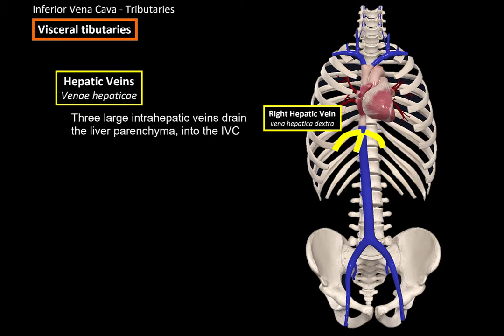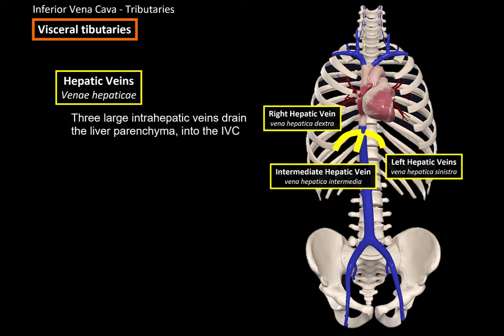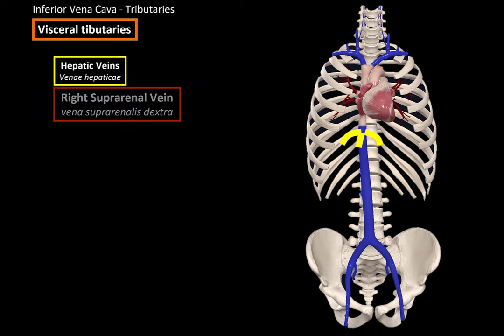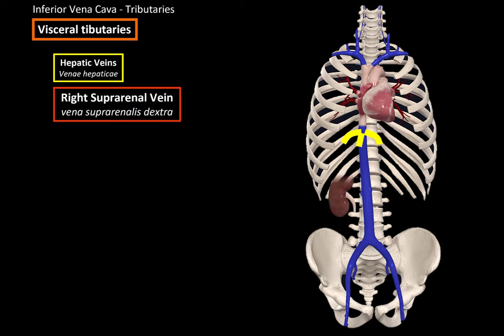There are three hepatic veins: the right hepatic vein, the intermediate, and the left. Next we have the right suprarenal vein, which drains blood from the suprarenal gland into the inferior vena cava.